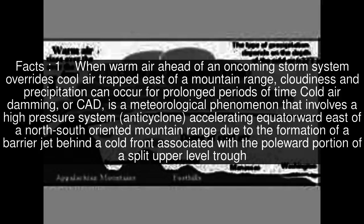When warm air ahead of an oncoming storm system overrides cool air trapped east of a mountain range, cloudiness and precipitation can occur for prolonged periods of time. Cold air damming, or CAD, is a meteorological phenomenon that involves a high-pressure system, or anticyclone, accelerating equatorward east of a north-south oriented mountain range due to the formation of a barrier jet behind a cold front associated with the poleward portion of a split upper-level trough.